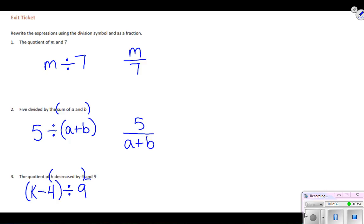So to show it with a division sign I have k decreased by 4 divided by 9, and to show it written in fraction form I'm going to have k decreased by 4, the fraction bar represents my division, and I'm dividing by 9, that's my divisor. So three different examples on how to write division expressions. I hope this helps you in your practice, make a difference today.